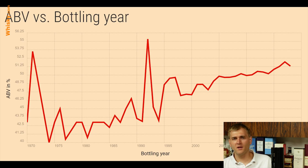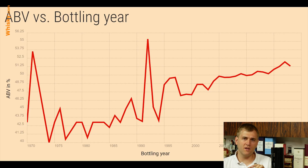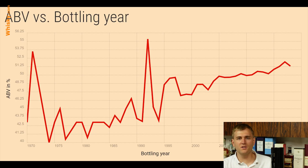Then we look at the y-axis. It's actually the average alcohol content of the whisky at a particular year. You take one year, average the alcohol content of all the whiskies bottled that year, and that gives you the reading shown in the diagram.